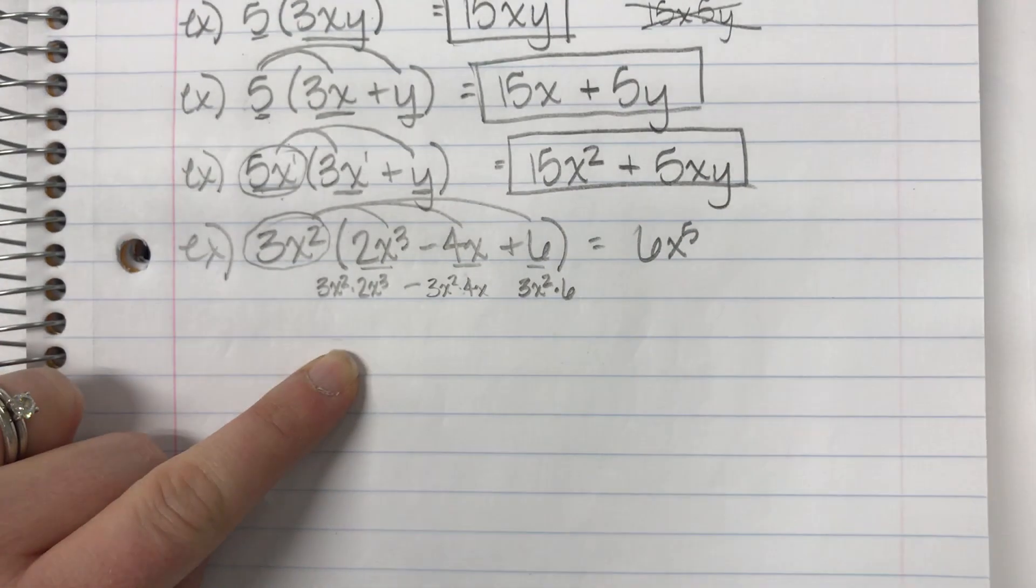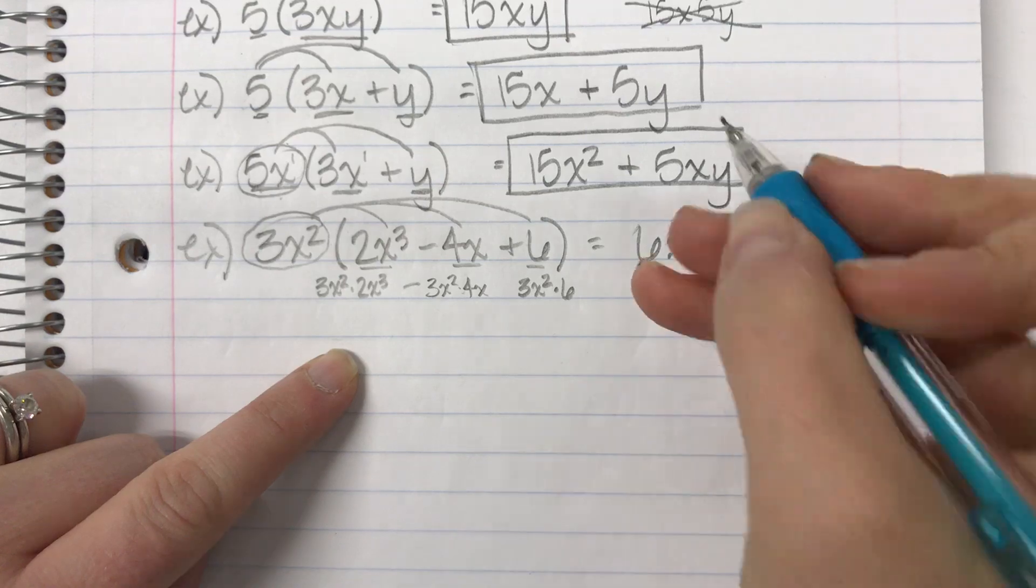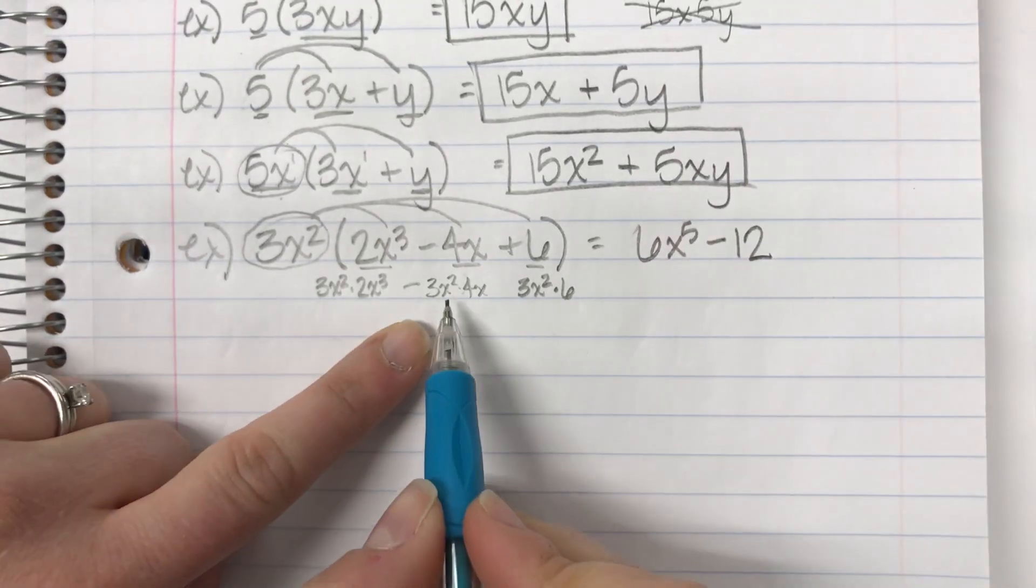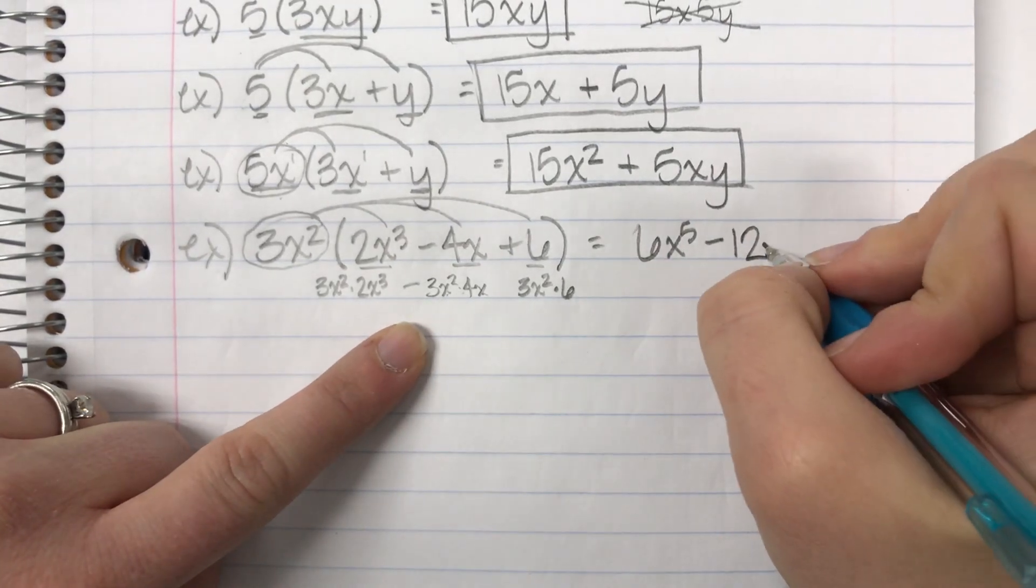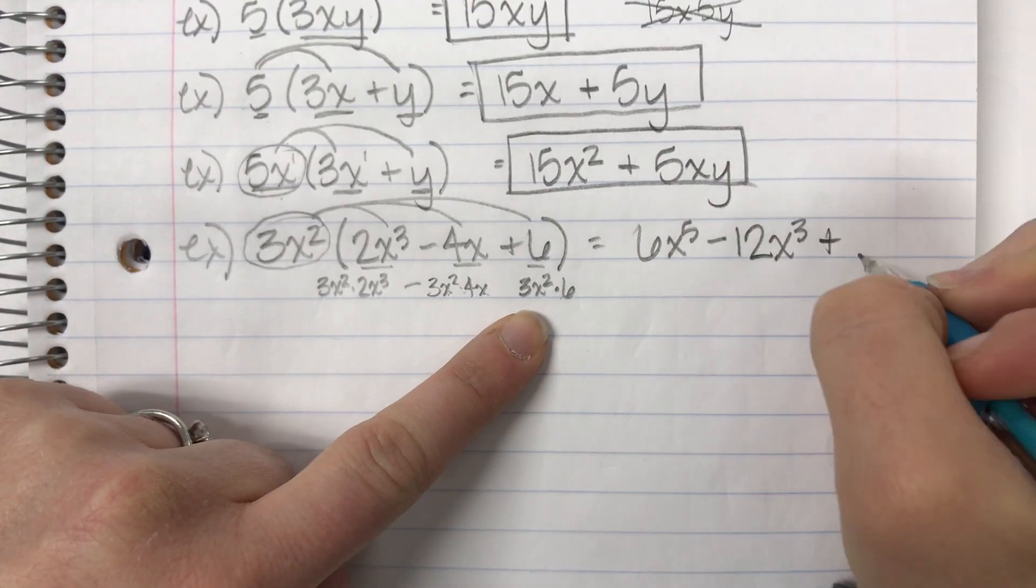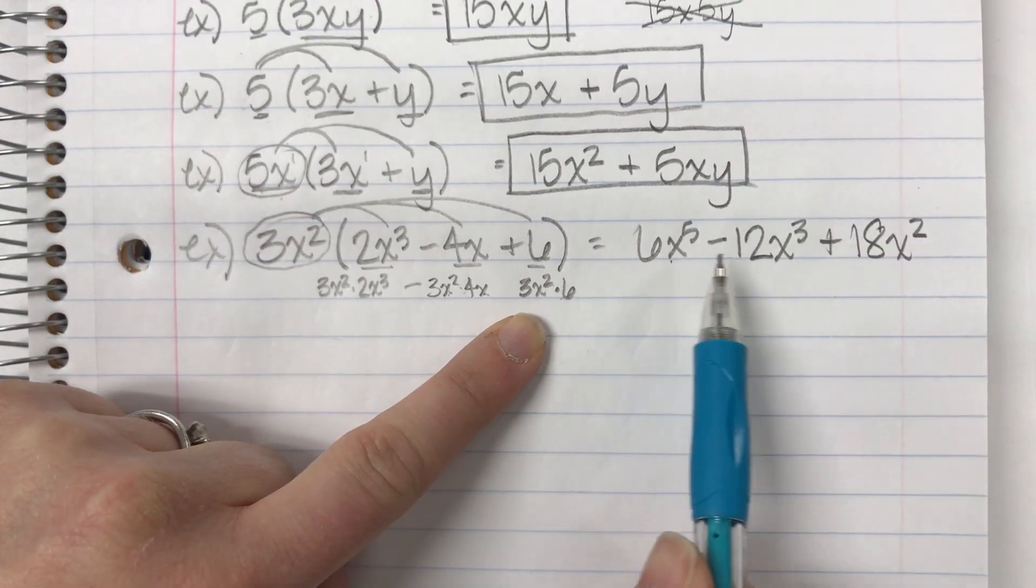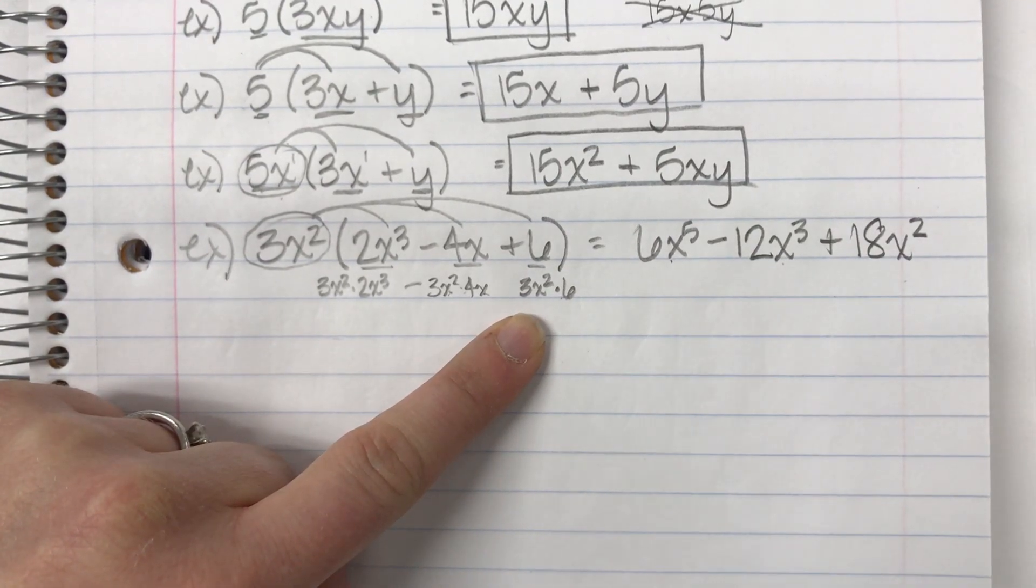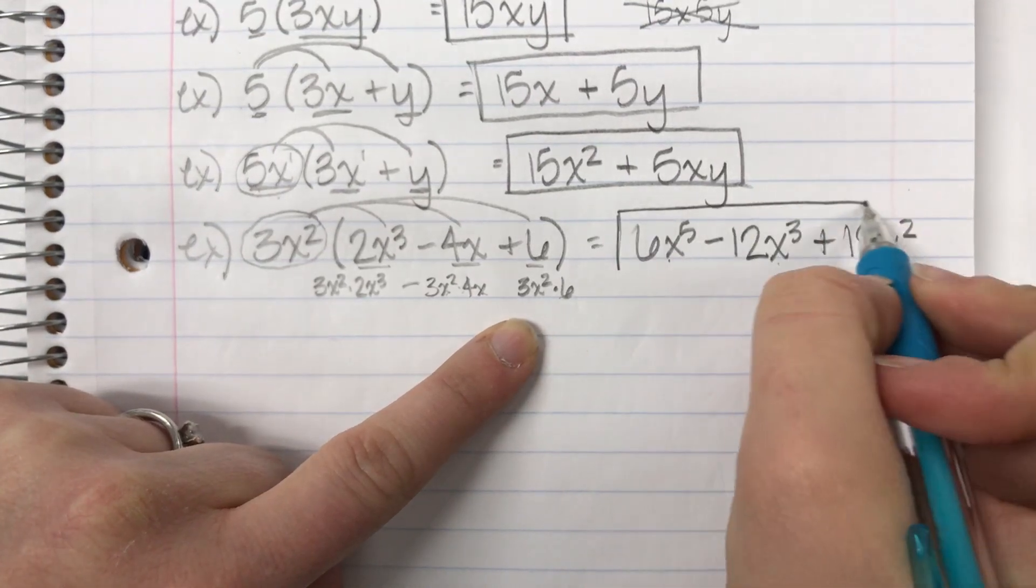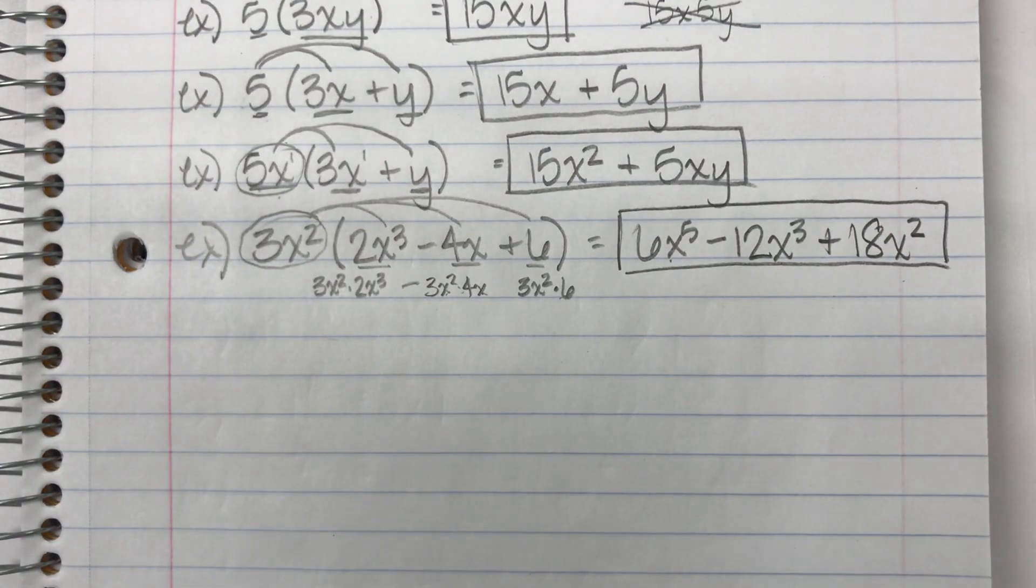So, I get 6, add the exponents, would make x to the fifth, minus, multiply coefficients, 12, add the exponents, x to the third, plus 18x squared. None of these are like terms, so I'm done. I distributed, and then there were no like terms to add together.